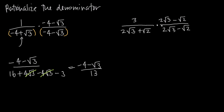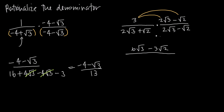When we do our multiplication, when we multiply the 3 by the numerator, this is just the distributive property, so we want to make sure we multiply the 3 by the first term and also by the second term. So our new numerator is going to be 3 times 2 root 3, which gives us 6 root 3, and then 3 times negative root 2 is minus 3 root 2. Then in our denominator, we're going to FOIL these out — we have two binomials multiplied together.